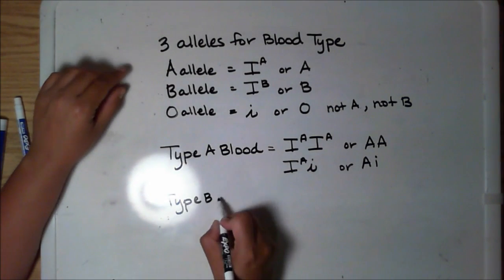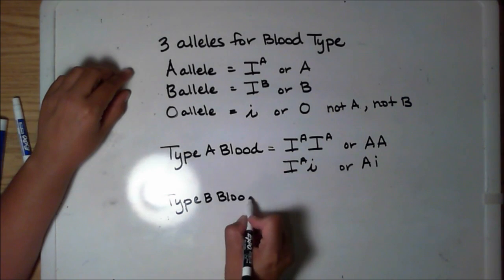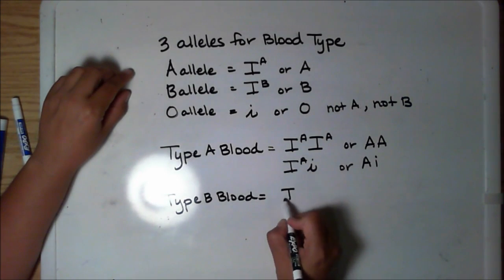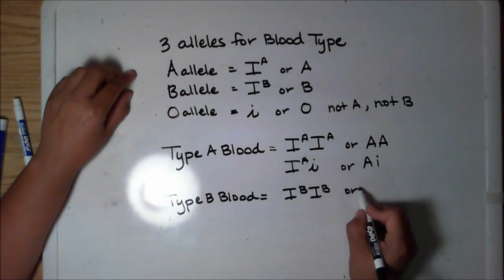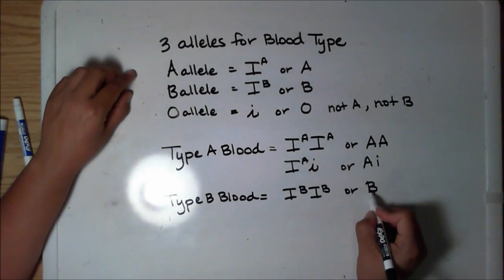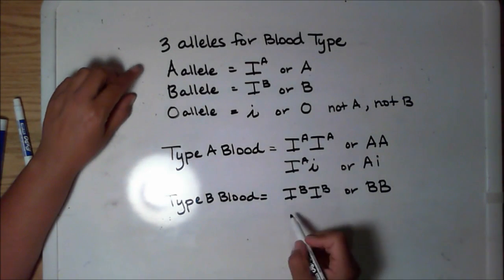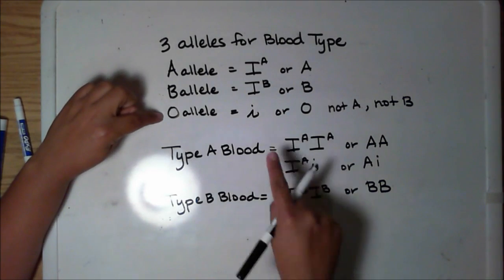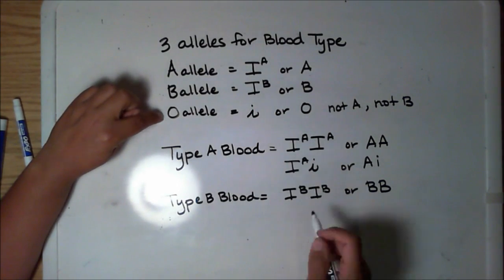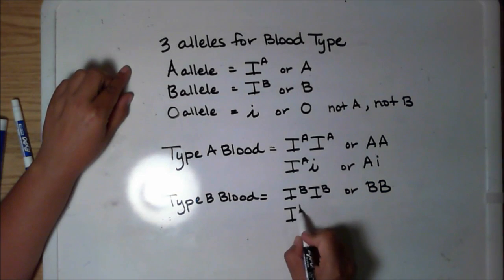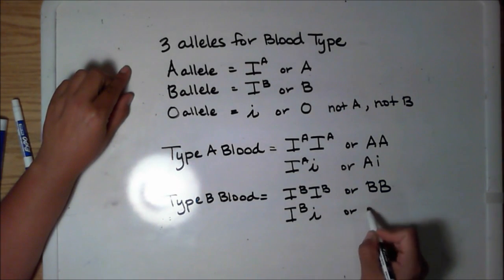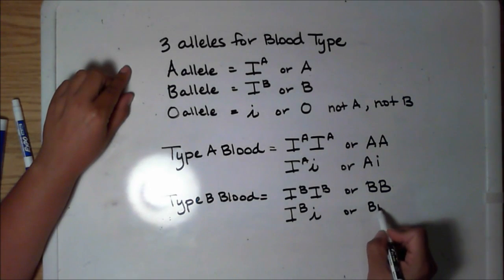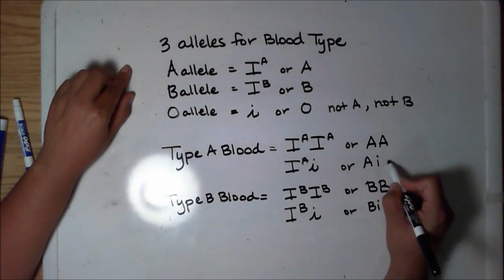The same thing applies for type B blood. An individual who has type B blood can be homozygous for type B, which we can write two ways, or they can be heterozygous, inheriting one B allele and one O allele. We can write that two ways as well. One's not better than the other — it's simply preference.